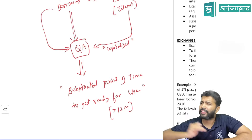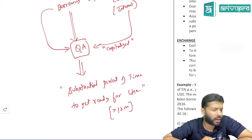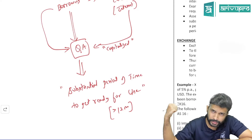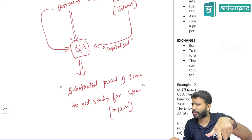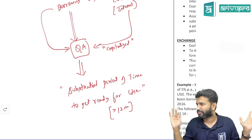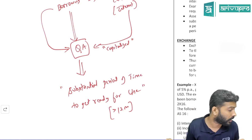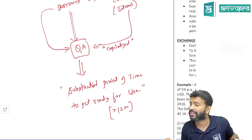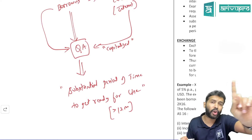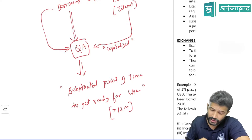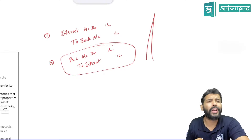I purchased a television — is it a qualifying asset? Is it taking substantial period of time to get ready, or is it already ready for use? This TV is already ready for use — just plug it in and done. What about AC purchased, laptop purchased, furniture purchased? All of these are non-qualifying assets. They are not qualifying because they are already ready for use immediately, not taking more than 12 months. If it is not a qualifying asset, the interest cost will go to P&L, not added to the cost of the asset.